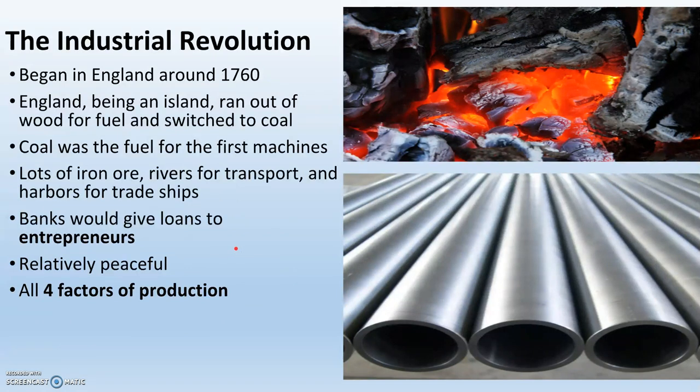The Industrial Revolution begins in England around 1760. The first big cause is the Agricultural Revolution. There are several other causes. First off, it's coal. England is an island — they're using wood for fuel, to heat their homes, to run their stoves. But they're going to switch to coal. There's lots of coal in England.